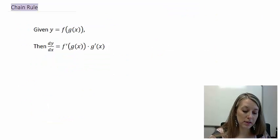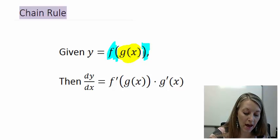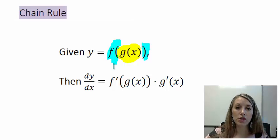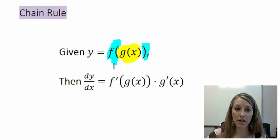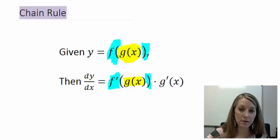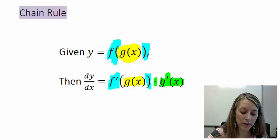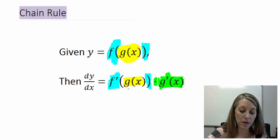The chain rule applies when we have one function — g(x) — inside a second function — f(x). It's called the chain rule because it's like a chain reaction: if we take the derivative of one, we have to take the derivative of the other as well. The way it works is: take the derivative of the outside function f, keeping g(x) as is, and then multiply by the derivative of the inside function g(x).